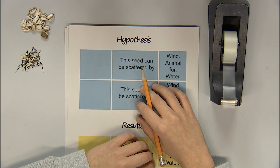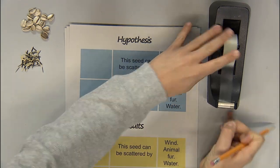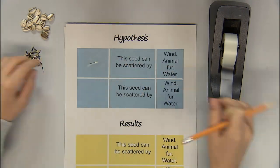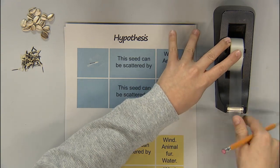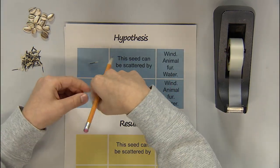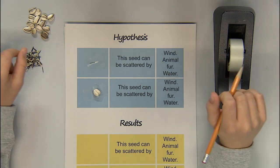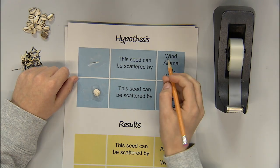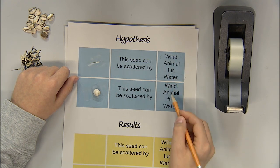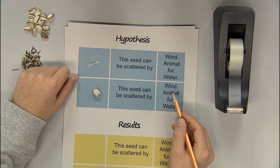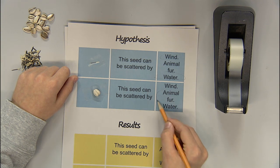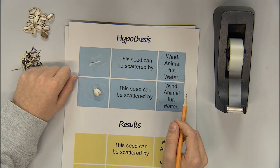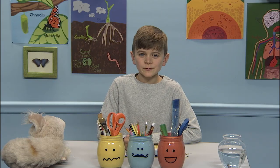Before I start, I'm going to record my hypothesis — what I think is going to happen with the seeds. I'll take my marigold seed here and my sunflower seed here. I think that the marigold seeds will be able to travel by wind and water, but not on an animal. And the sunflower seeds will be too heavy to be scattered by wind, but able to travel by an animal. I think that because the seed is so big, it's going to sink in the water. Well, let's find out.